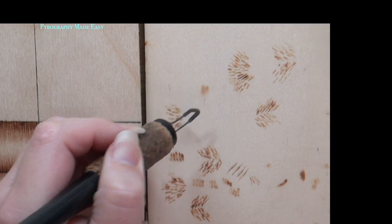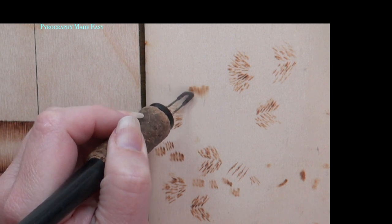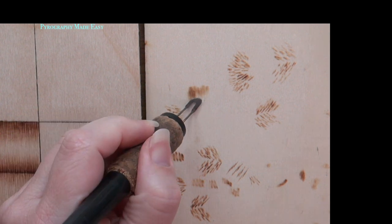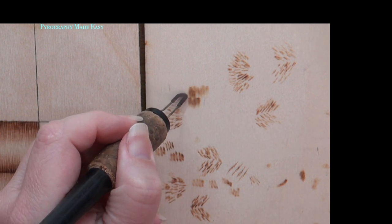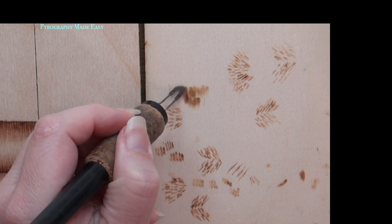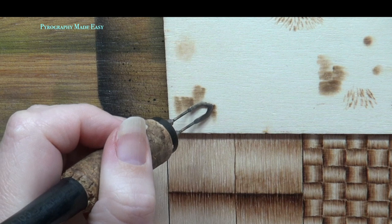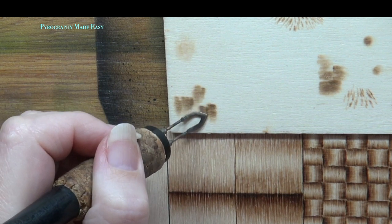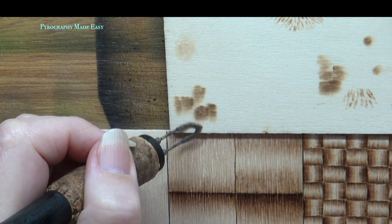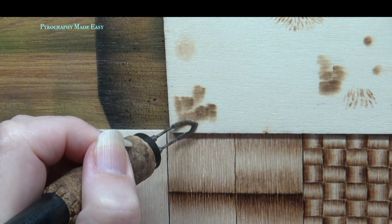Adjusting the heat. Before your pen tip ever touches the board, always make sure you are getting the desired burn color on a scrap board first. Adjust the heat on your burner in low increments until the desired color is achieved. Any time you switch pen tips or boards do this exercise all over again because no two pen tips or boards will require the exact same heat setting.